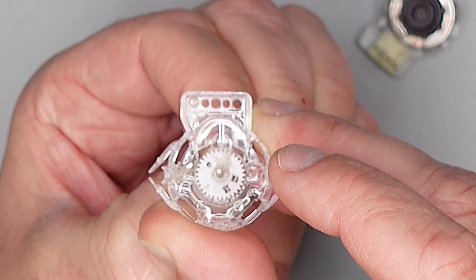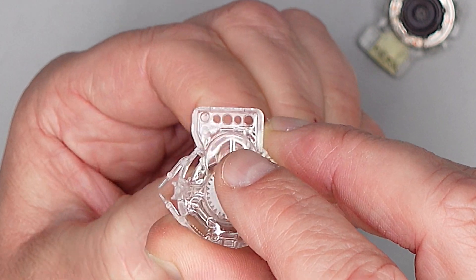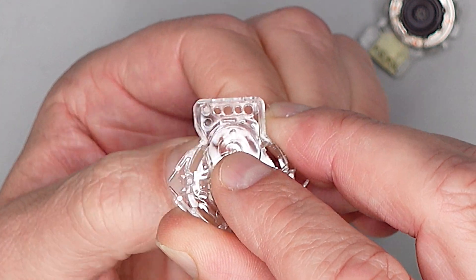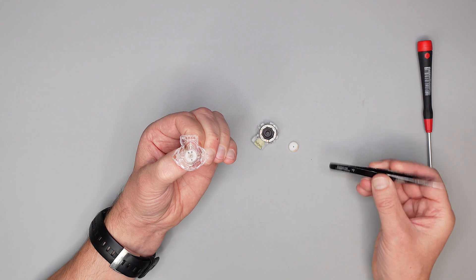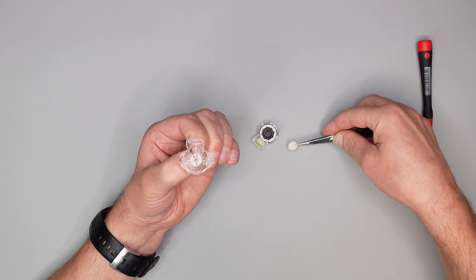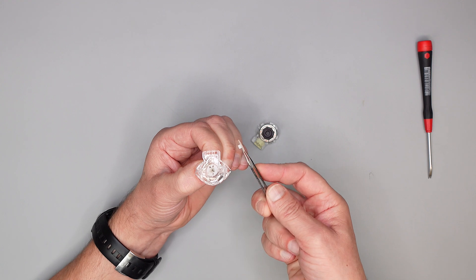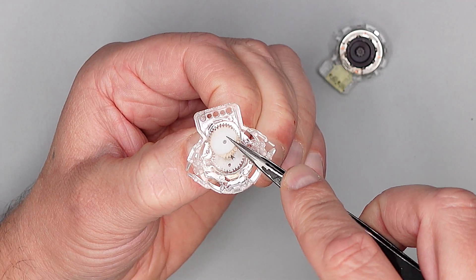Und wieder runter. So, jetzt können wir nicht mehr zurück, jetzt ist die Feder etwas vorgespannt. Ich drehe dann mal noch ein Stückchen mit. So, dann nehmen wir das zweite Zahnrad, setzen es jetzt hier auf die Achse auf.